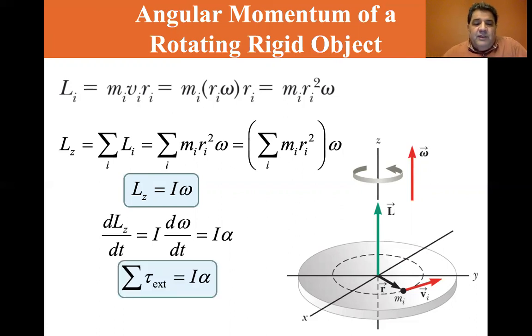And we see that the sum of the external torques is equal to I alpha. So L is equal to I omega.